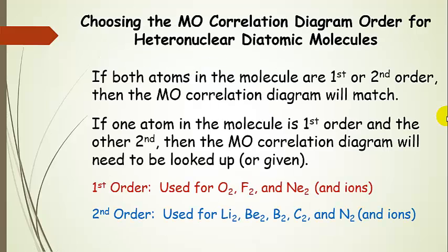Now, when you're choosing an MO correlation diagram, you still have the choice of a first or second order. Now, if both atoms in the molecule are first or second order, so if they match, then use that correlation diagram. Use the one that they both agree on. Now, if one atom in the molecule is first order and the other second, then you have to look up the correlation diagram, or it'll have to be given to you. But you wouldn't have a way to figure out which one to use for that.